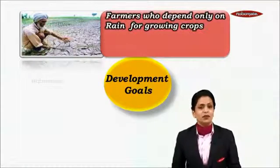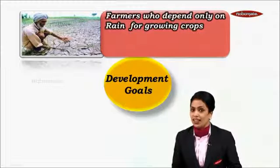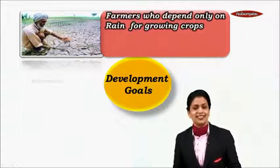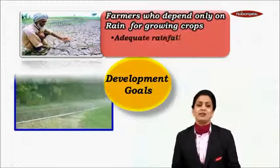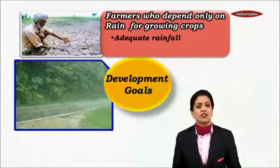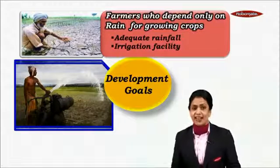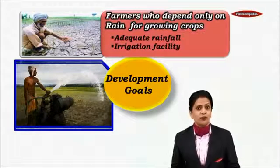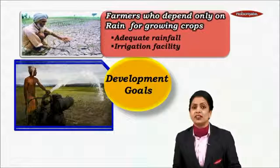For a farmer who depends only on rain for growing crops, any guesses what will be his aspiration? His aspiration is adequate rainfall, and in case of no rains, he would want irrigation facilities.